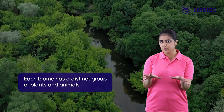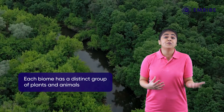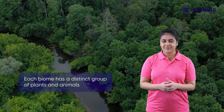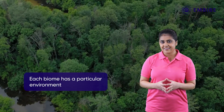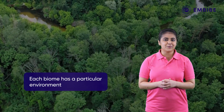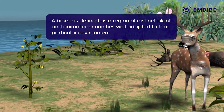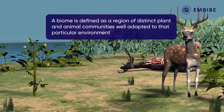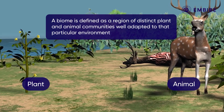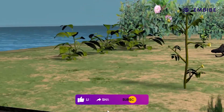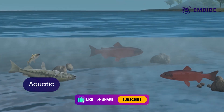I'm excited to announce our visit to a terrestrial biome. If you're wondering what that is, it is a general term used for a desert, tropical rainforest, a savannah, etc. By the way, ponds and oceans are called aquatic biomes. A biome is defined as a region of distinct plants and animal communities well adapted to that particular environment.